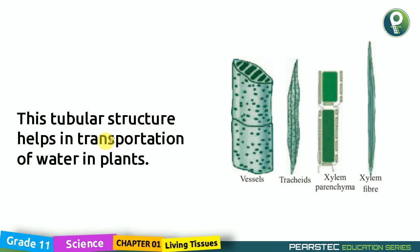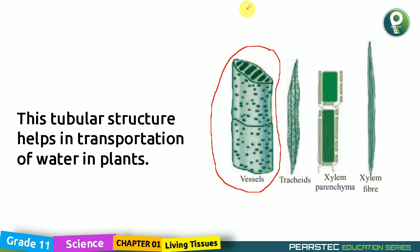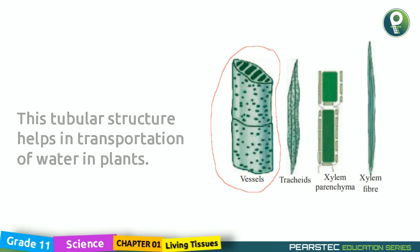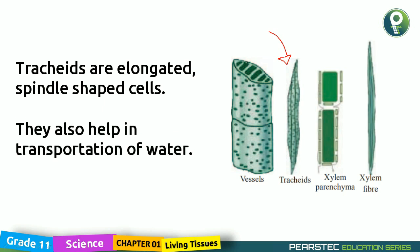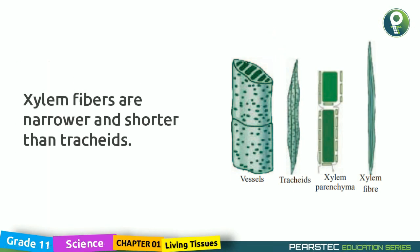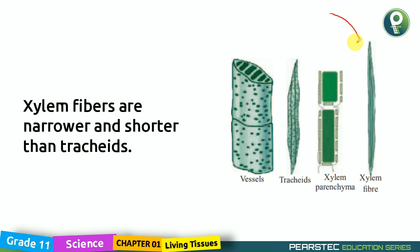This tubular structure helps in the transportation of water in plants - this tube-like structure helps water to transport from the root. Tracheids are elongated spindle-shaped cells, and they are also helping in the transportation of water. So both vessels and tracheids help to transport water. Xylem fibers are narrower and shorter than tracheids.